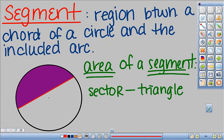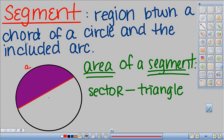The second part of a circle we're going to talk about is a segment. A segment is a region between a chord of a circle and the included arc. So we just discussed that this would be the arc. A chord is a line segment that goes across a circle. It has endpoints on the circle. So this would be your chord.